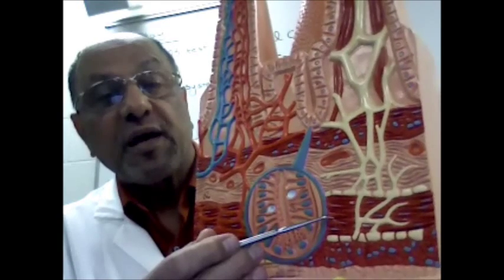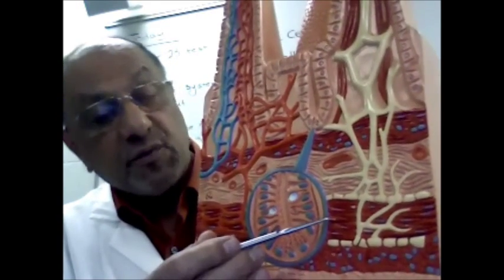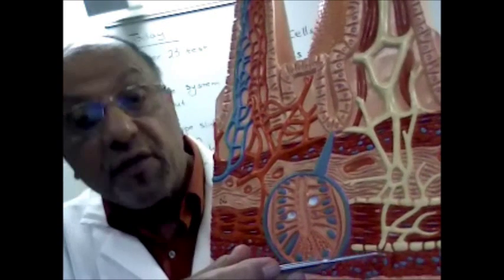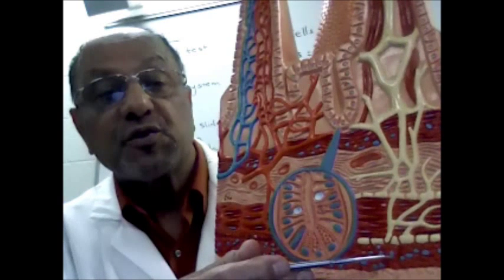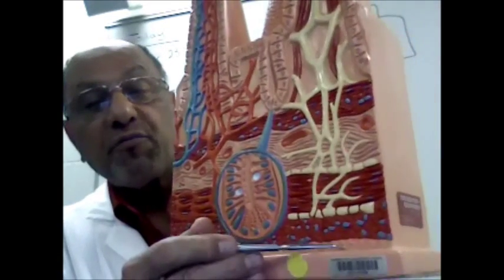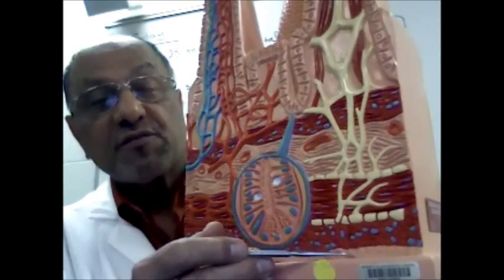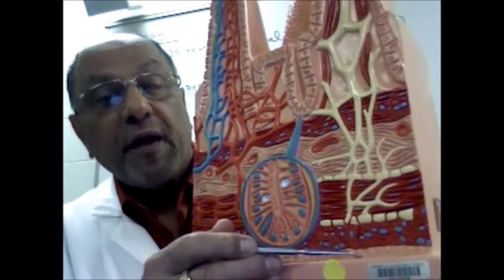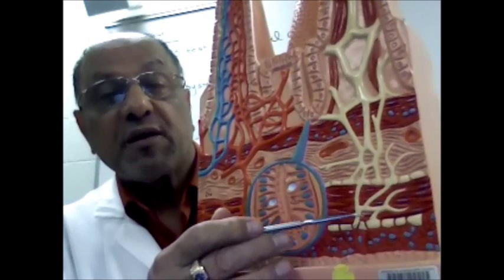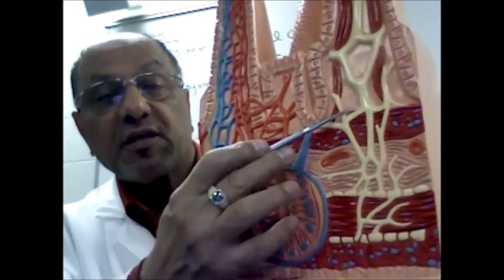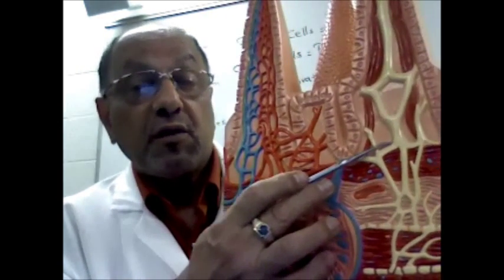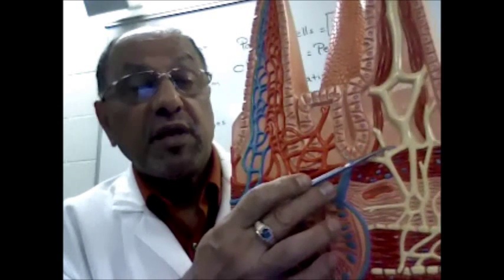Then we have two layers of smooth muscle shown in red; they represent the muscularis layer. The one on top is the circular layer and the one below is the longitudinal layer. On the outside, the covering of the digestive system wall is called the serosa. So we have serosa, muscularis, submucosa, and mucosa.